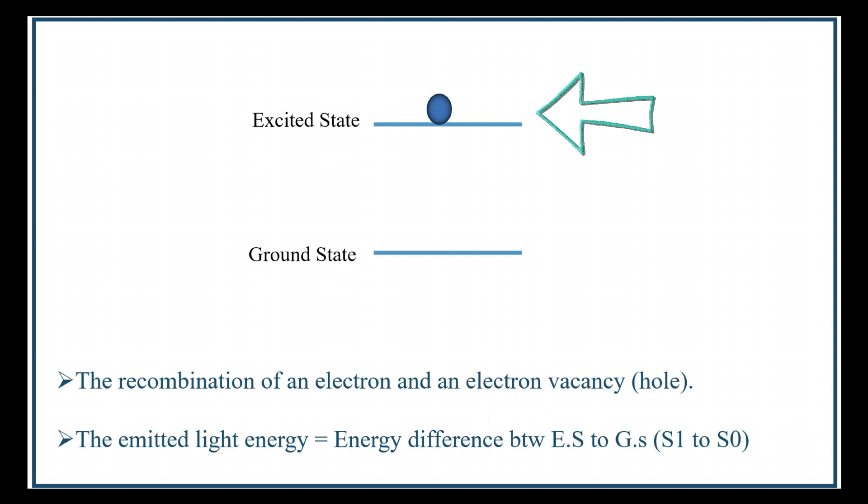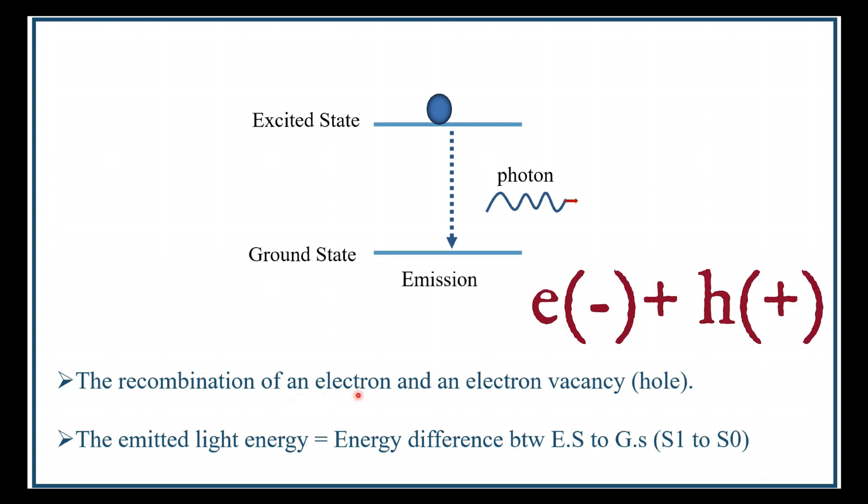As the electron will not like to sit at the high energy level, it will try to come to the low energy level by emitting its energy in the form of radiation. This process is called emission. Or in another way, it is the recombination of an electron and an electron vacancy, which is known as a hole.